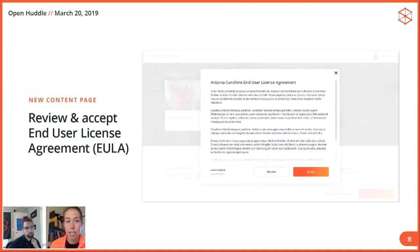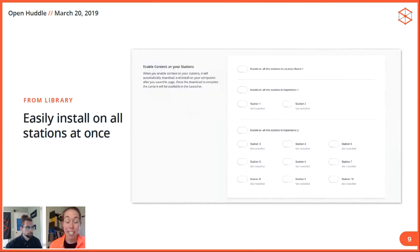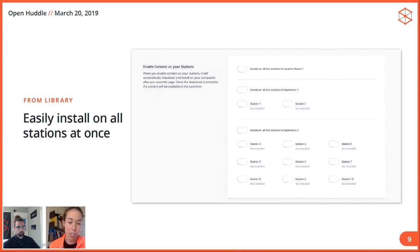This is what the EULA will look like. You can scroll through — it's going to show you when this has been updated by the content creator. You do have to accept this EULA in order to add it to your library. Once you do accept it, it's going to take you straight to the content page in the library where you can install it onto all your stations. This is something we're really excited about — I've received a lot of feedback from operators that this is going to make your lives a lot easier. All you have to do is enable it, click the switch, and you can do it based on location, experience type, or individual station. At any time, it'll show you which stations it's installed on, and if it's in the middle of installing, it'll give you a percentage of where it's at in the install process.